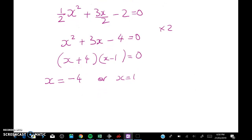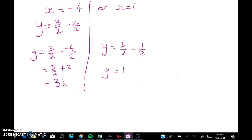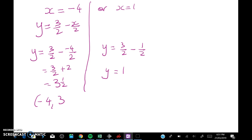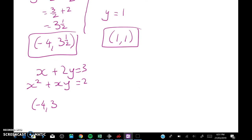But we need to find the value for y. So what was y? Well y was 3 over 2 minus x over 2. So we've got two solutions that we've got to find. y is equal to 3 over 2 minus negative 4 over 2 which is 3 over 2 plus 2 which gives me 3 and a half. Or when x equals 1, y is equal to 3 over 2 minus 1 half which gives me y equals 1. So my two solutions are these: negative 4 and 3 and a half, or 1 and 1. Right but what I have to do now is go right back to the equations and check that they actually work.